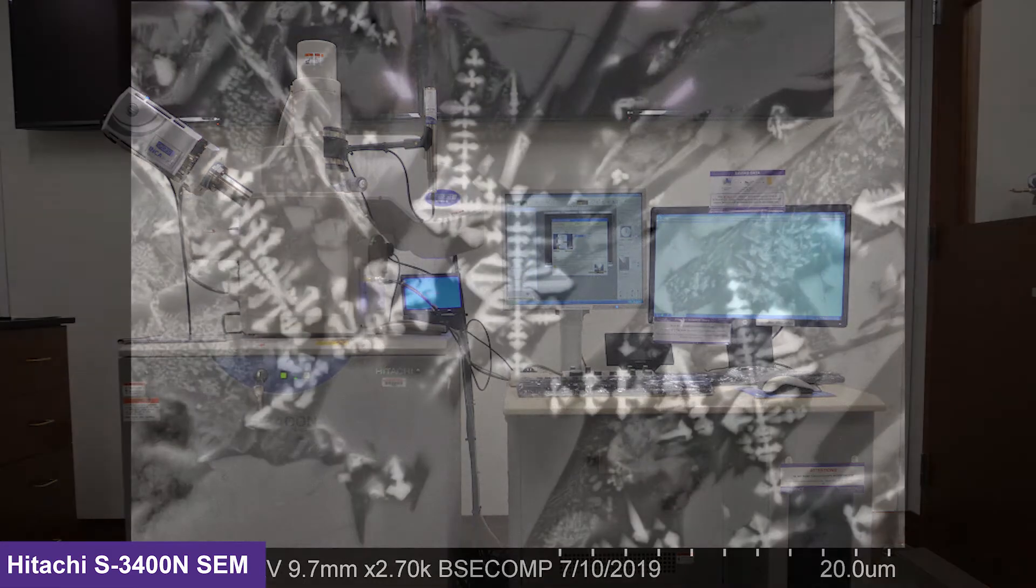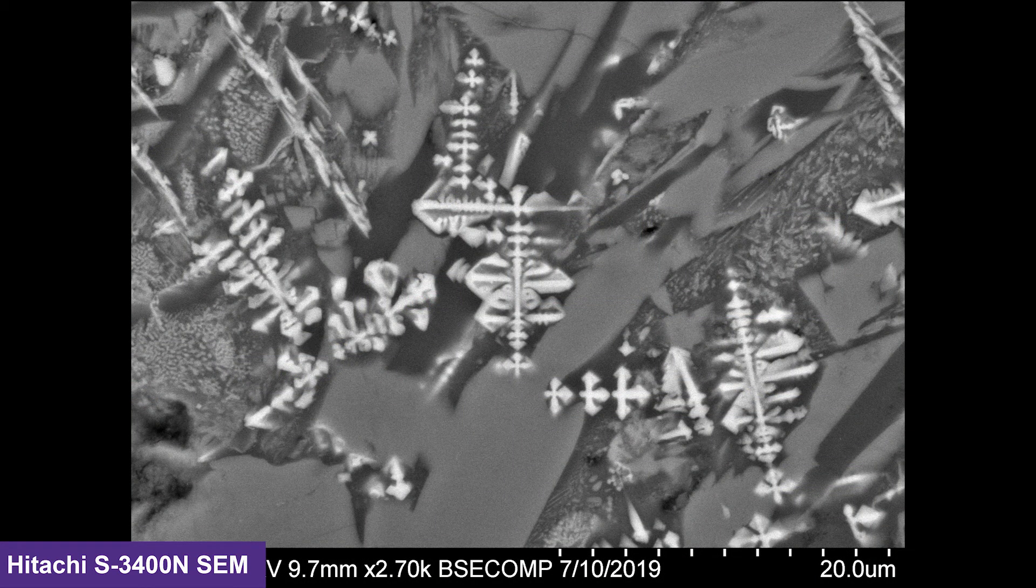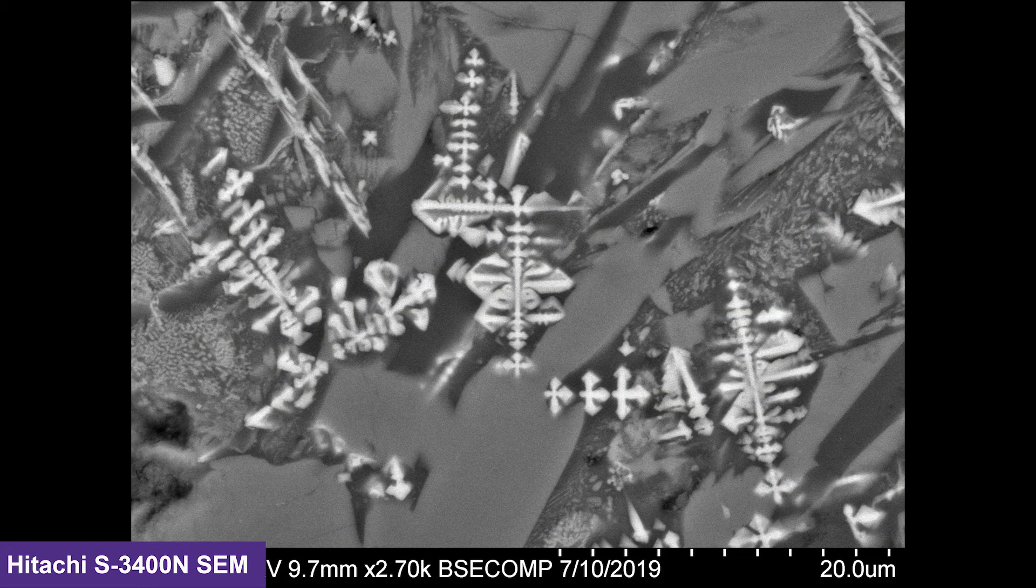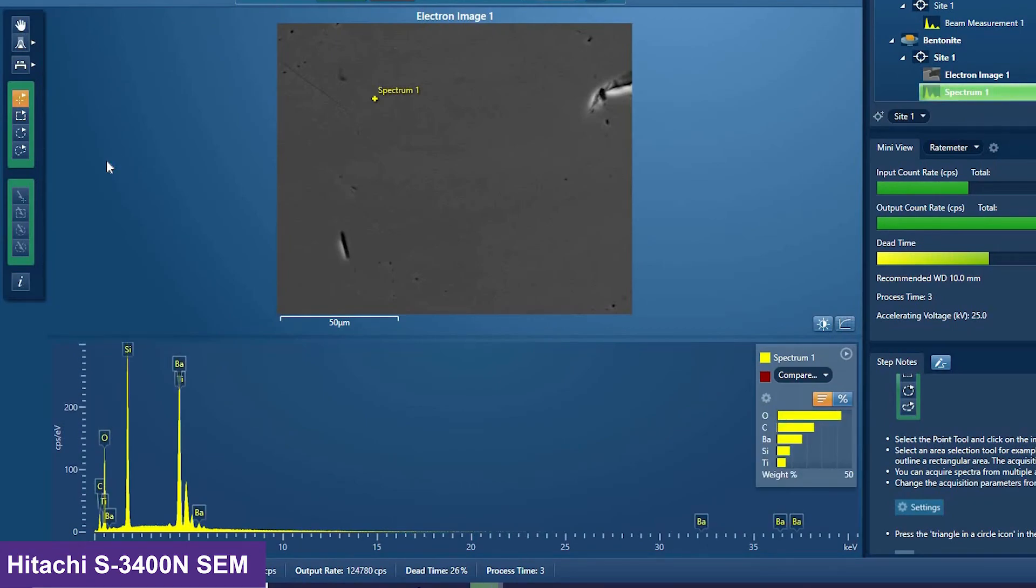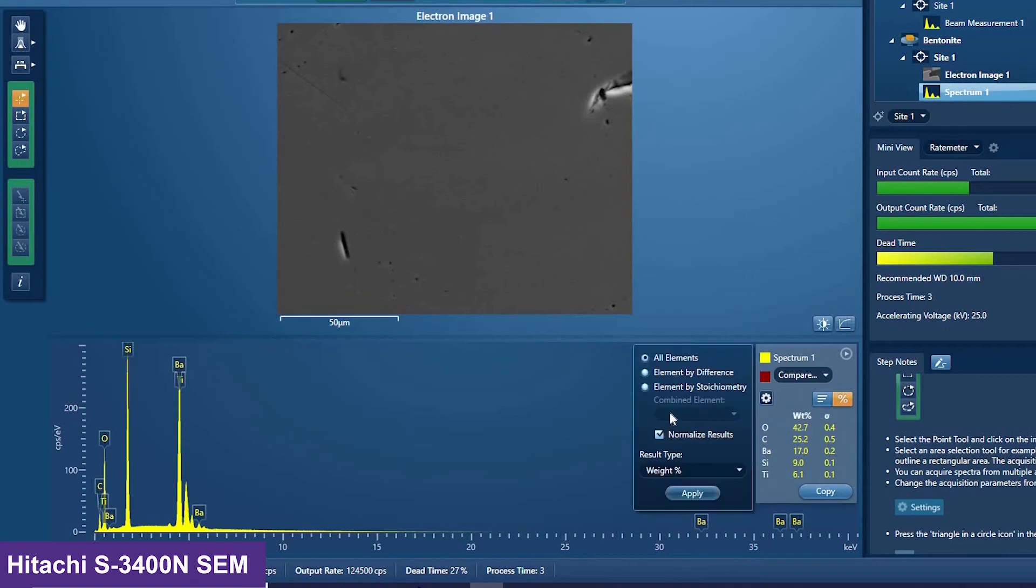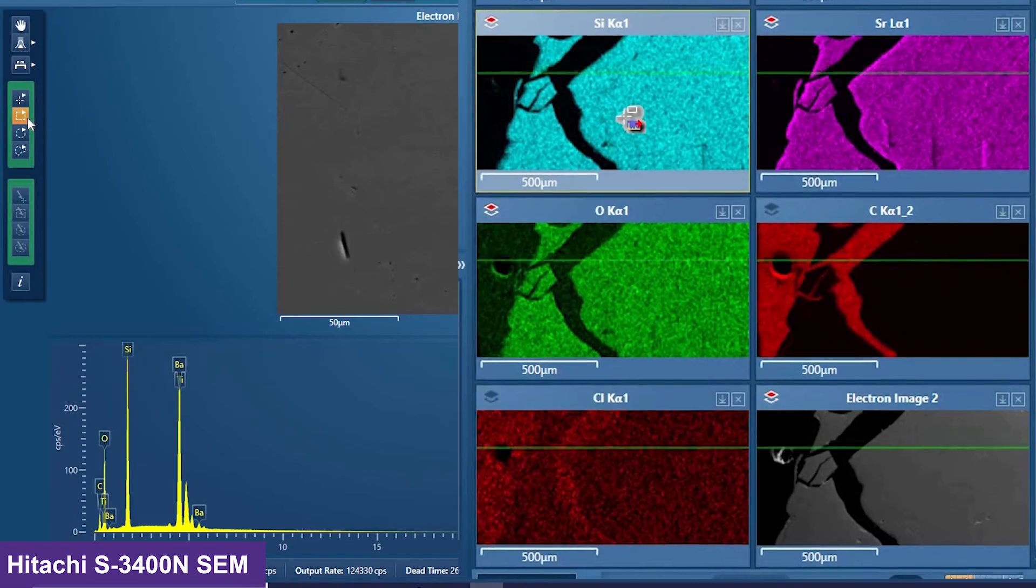The 3400 has an SE detector along with a BSE detector for compositional contrast imaging. This microscope, along with many of our other SEMs, is equipped with an energy dispersive X-ray spectroscopy system, or EDS, which allows you to perform elemental analysis as well as elemental mapping.